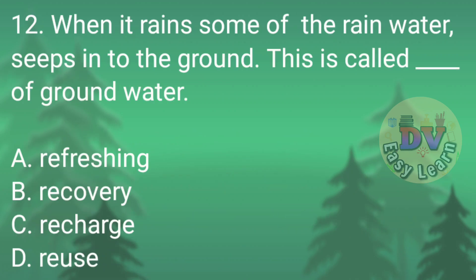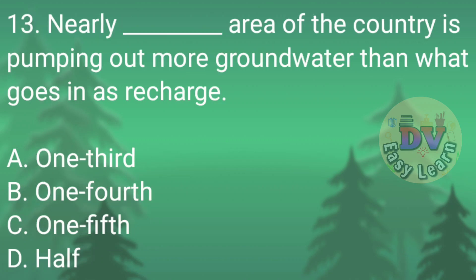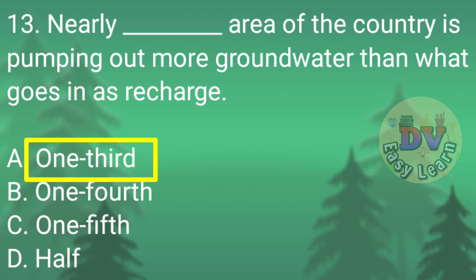Q12: When it rains, some of the rain water seeps into the ground. This is called dash of ground water. Correct answer: Recharge. Q13: Nearly dash area of the country is pumping out more ground water than what goes in its recharge. Correct answer: One third.